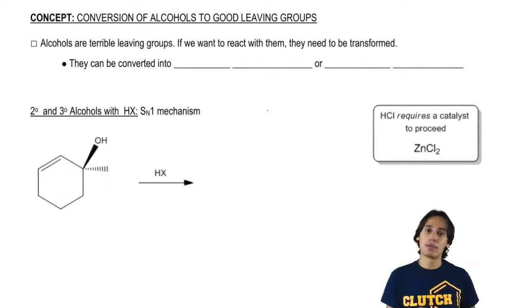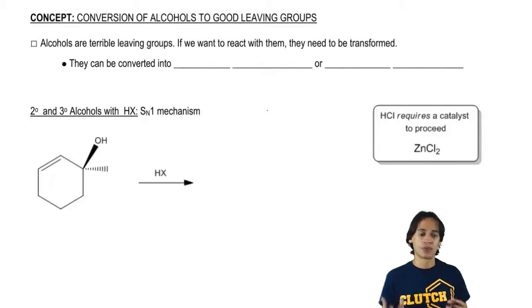It turns out that there's two major options, like a fork in the road. We can take two major pathways and they're both going to lead to awesome outcomes. They're both going to lead to alcohol being a much better leaving group. Let's go ahead and talk about the first one.